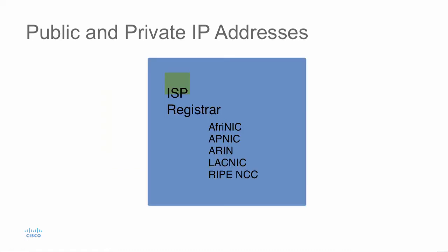So if you wanted to obtain an IP address, what would you do? Well, you'd probably contact your internet service provider, and that would be a good start. But where does your internet service provider get their address space allocations? Well, they've got to go to a registrar. And the registrars are going to be based on geographic locations.